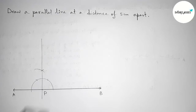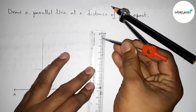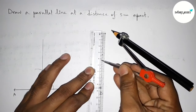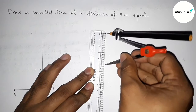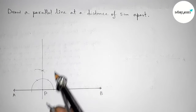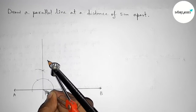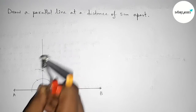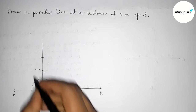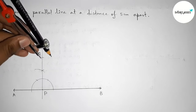Now with the help of the scale, taking 5 centimeter length — 1, 2, 3, 4, 5 — this is 5 centimeters. Putting the compass on point P and cutting here. Taking point Q, so PQ equals 5 centimeters.